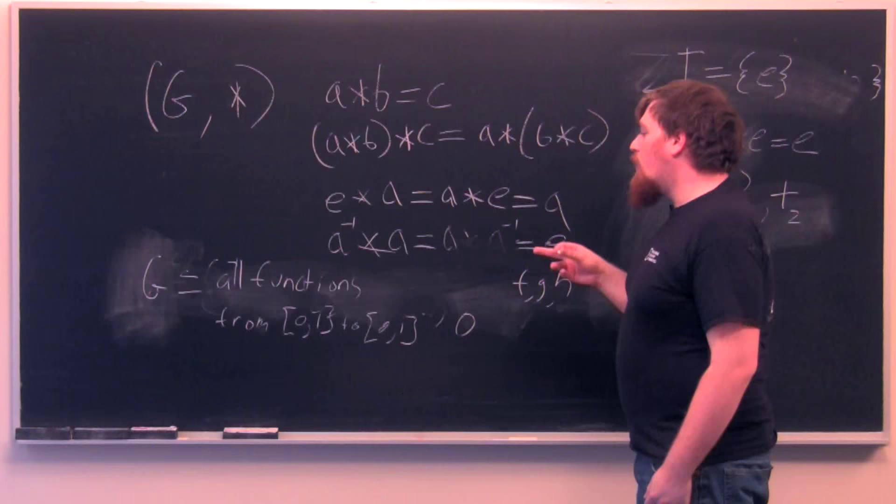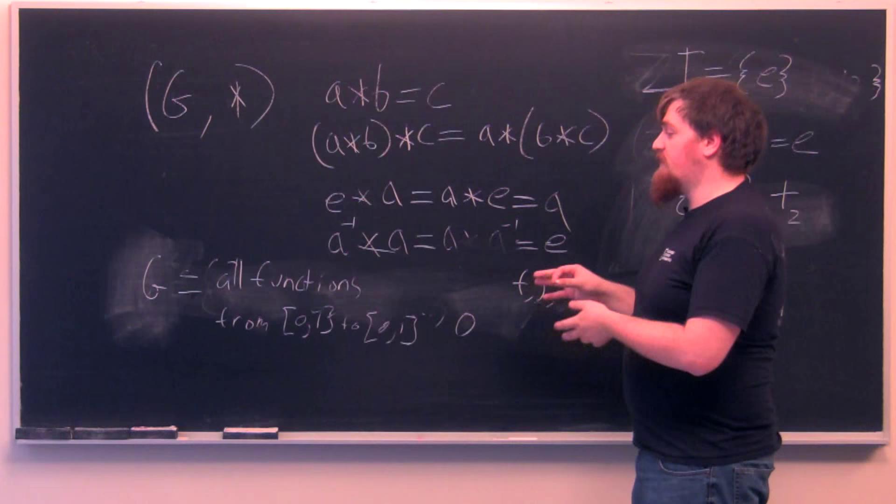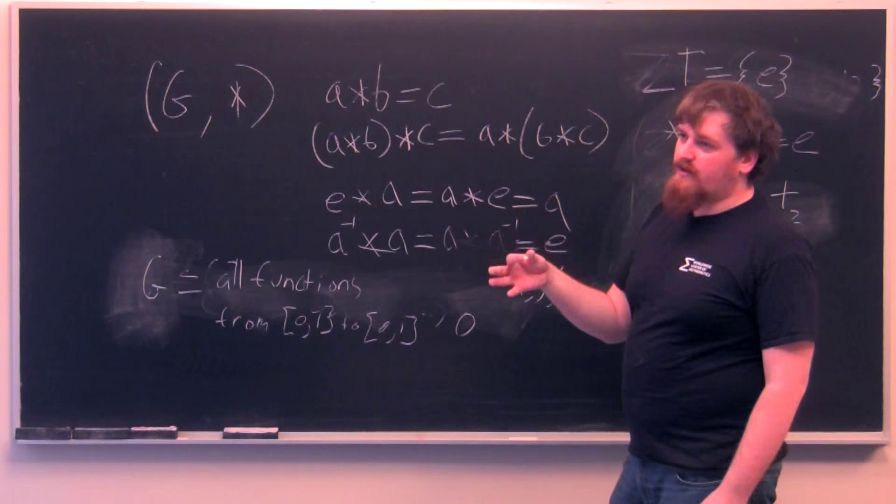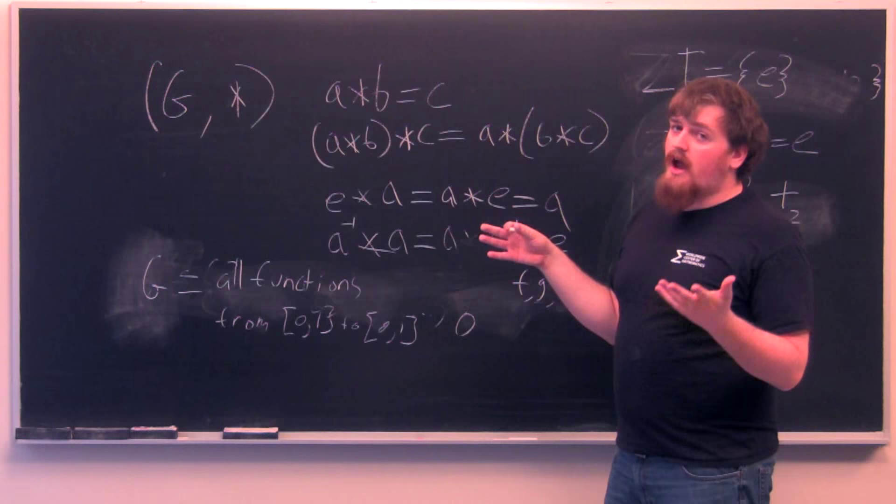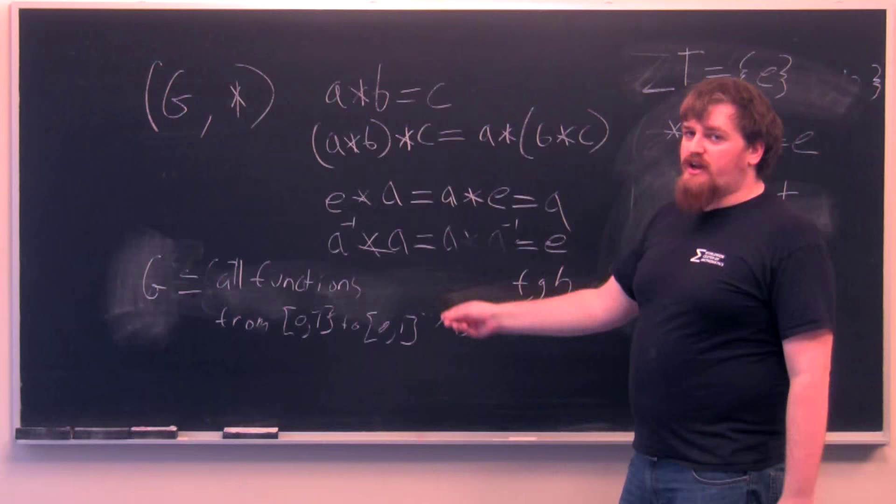But here we want to run into a snag because, what's the inverse of the function that sends every element to, that sends everything in 0, 1 to 0? That can't have any inverse because anything composed with it will have to send 0 to some other constant and that just gives you another constant function out, which isn't the identity function. So, we'll have to slightly change our definition of G.